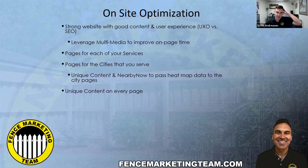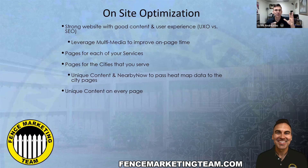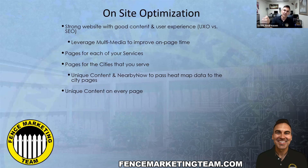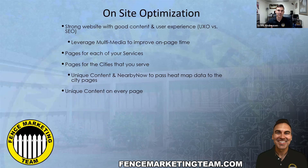Create pages for each of your services and pages for the cities you serve. Unique content is important. There's an app called Nearby Now where you can take photos on the job and it instantly uploads them to your site with geo-modified content — that's an easy way to automate your SEO. It tells Google the longitude and latitude of where you took that picture, and they even insert your keywords in there. You click a button and you're done — it's a very nice trick that works really well.